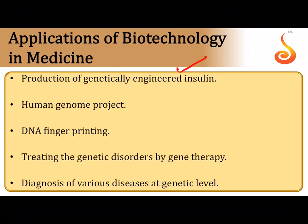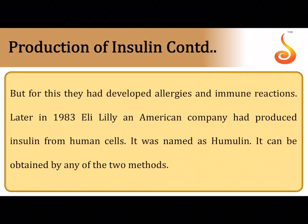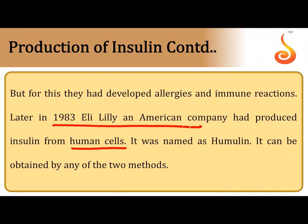Applications of biotechnology in medicine include genetically engineered insulin, the human genome project, DNA fingerprinting, gene therapy, and molecular diagnosis. Insulin is normally produced in the beta cells of the islets of Langerhans; deficiency causes diabetes mellitus. Earlier, insulin was extracted from animal pancreases, but allergic reactions led to the development of genetically engineered insulin. In 1983, Eli Lilly, an American company, produced insulin from E. coli cells, referred to as Humulin.